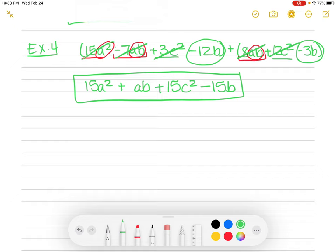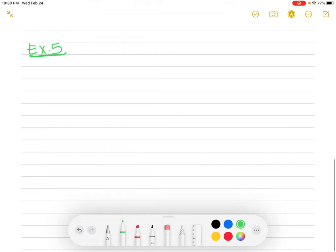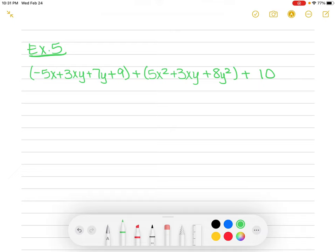Let me write that down. Example 5. Sorry, I was just looking at it to see if there was anything I needed to tell y'all before I did this. So we have negative 5x plus 3xy plus 7y plus 9. And then we're going to add 5x squared plus 3xy plus 8y squared. Remember, you can hit pause at any time so that you can see what I'm writing and take your time writing it on your paper.